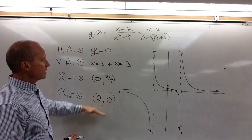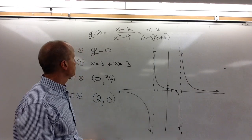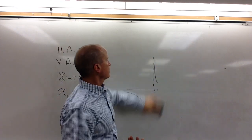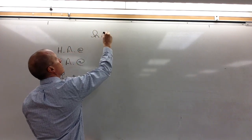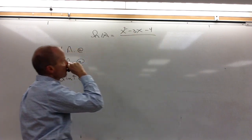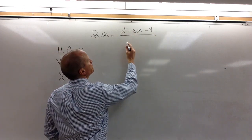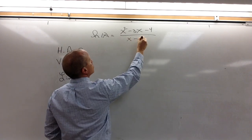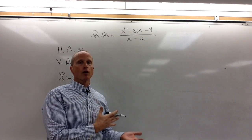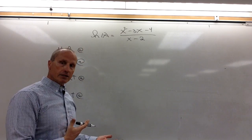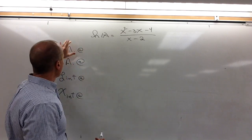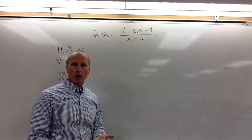And there's the graph of that rational function. Again, all of this information is relatively easy to find just by looking at the function. Now let's look at something a little different: h(x) = (x² − 3x − 4) over (x − 2). In this case, the degree of the numerator is larger than that of the denominator. When we have a situation like that, we will never have a horizontal asymptote. All the other information is found the same way.